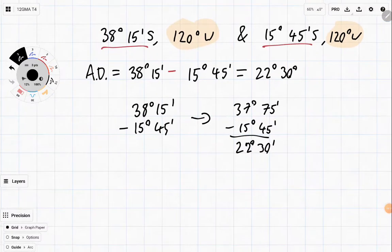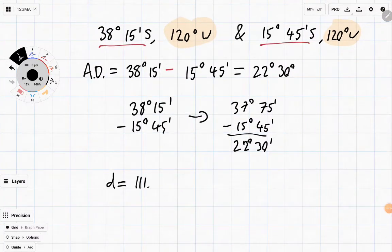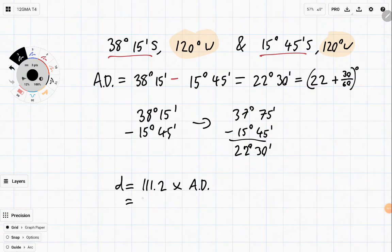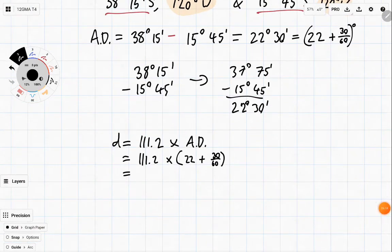But the problem is the rule says distance is equal to 111.2 times angular distance, right? But the problem here is that my angular distance isn't in decimal. It's in degrees and minutes. So I need to turn this into degrees and minutes. And the way to do that is you go 22 degrees plus 30 over 60 degrees. So that's how you can convert from minutes into degrees. You just divide by 60. So it's in 30 minutes, 30 over 60. So you get 111.2 times 22 plus 30 over 60. And that's equal to 2502 kilometers. And there's our final answer, 2502 kilometers.